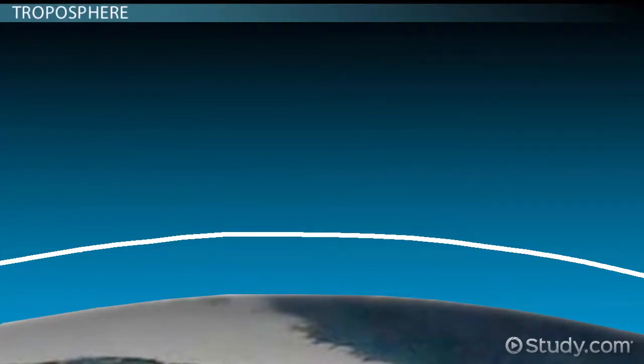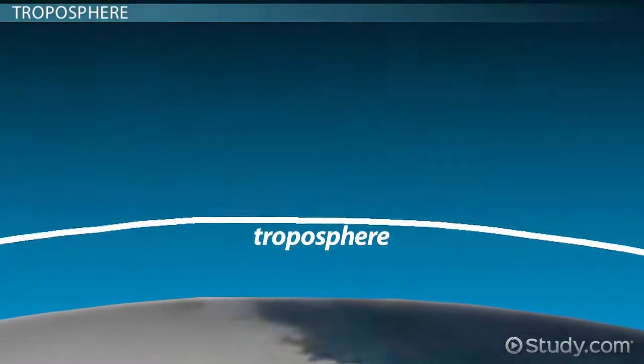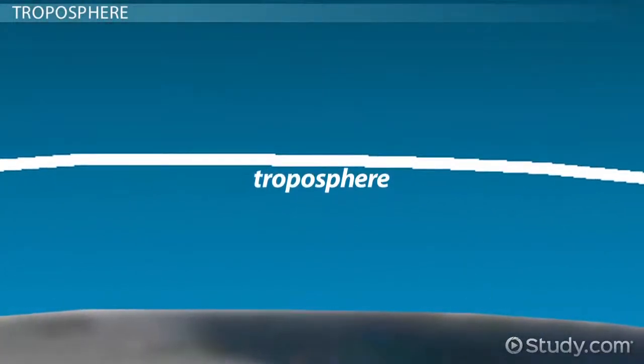The starting point for your mission is the troposphere, the lowest level of Earth's atmosphere. For the most part, this is where most of the aspects of the atmosphere that affect us on a daily basis occur.